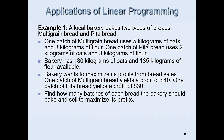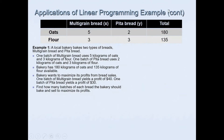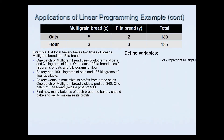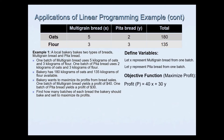Find how many batches of each bread the bakery should bake and sell to maximize its profits. I've created a table displaying the information given in context. We define the variables: let x be multi-grain bread batches and y be pita bread batches. The objective function — since we are maximizing profit — is given by 40x plus 30y, where 40 is the profit from multi-grain bread sales and 30 is from pita bread.